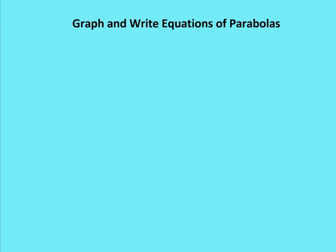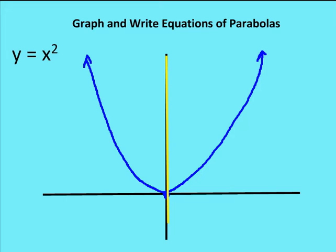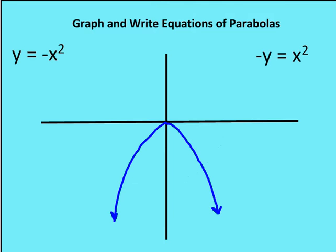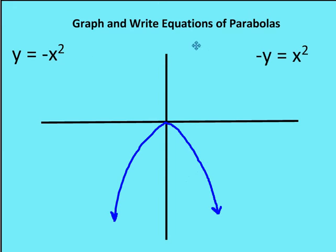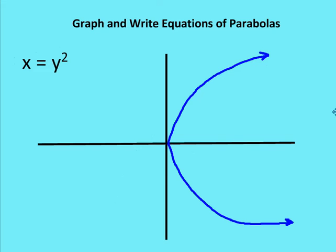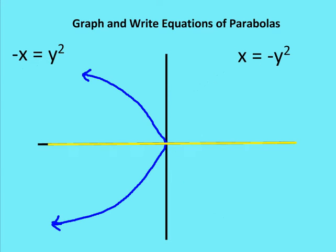Just a quick review on parabolas. We have parabolas that face up or down — when they do, the y value is not squared, the x value is squared. If the parabola faces down, y equals negative x squared, or negative y equals x squared. When the graph faces to the right, x equals y squared, and x and y are both positive or negative. When negative x equals y squared, or x equals negative y squared, the parabola opens to the left.